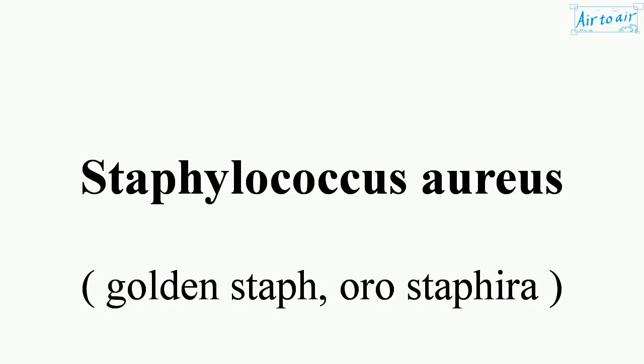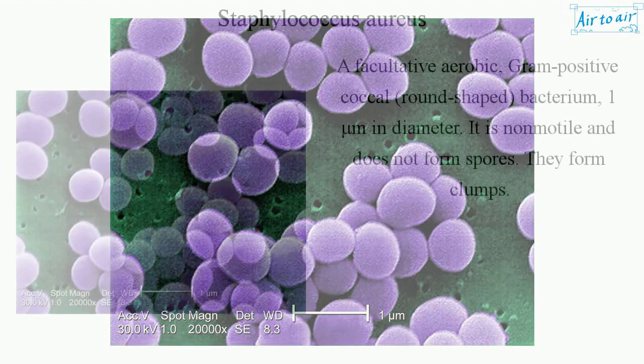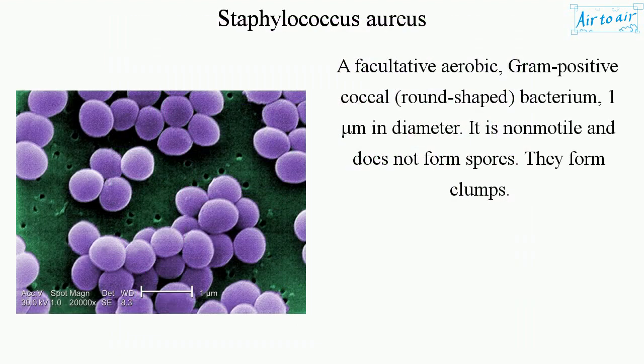Staphylococcus aureus. A facultative aerobic, gram-positive coccus, round-shaped bacterium, one micrometer in diameter. It is nonmotile and does not form spores.